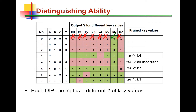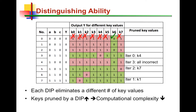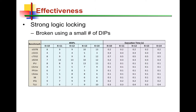In every iteration, a DIP eliminates a number of different key values. It depends on how the incorrect keys of that particular logic locking solution behave — whether the DIPs produced in every iteration are powerful in terms of their distinguishing ability. The more incorrect keys a DIP eliminates in an iteration, the quicker the SAT attack terminates successfully, directly affecting the computational effectiveness of the attack. When the SAT attack was developed in 2015, it broke all existing logic locking solutions.